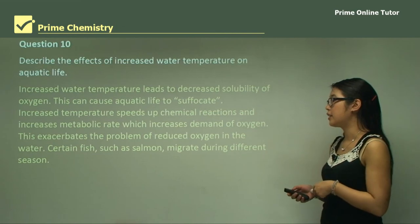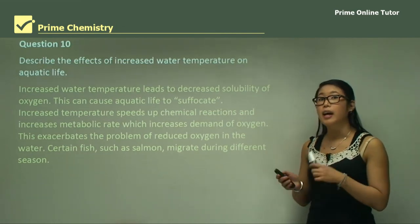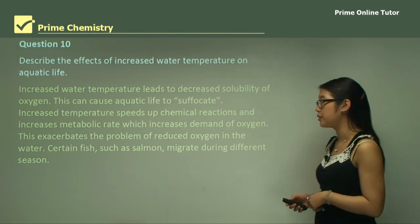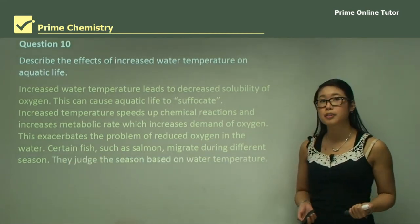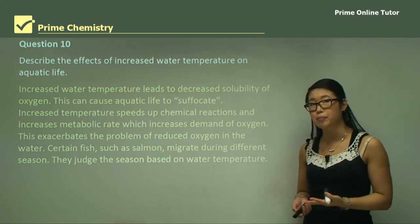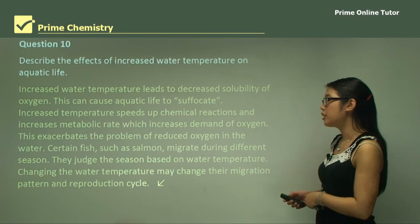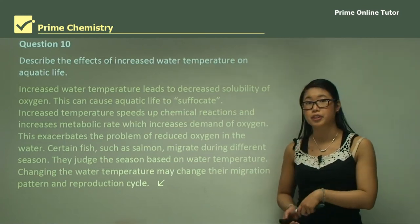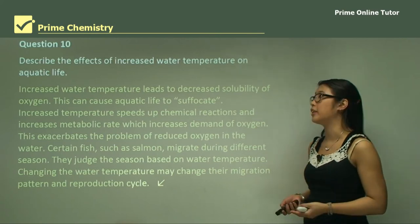Certain fish such as salmon migrate during different seasons, and the seasons are judged by how hot or cold the water is. They base when to migrate on water temperature, so if we heat the water up it may seem like summer has come too early. Changing the water temperature can therefore alter their migration patterns and reproduction cycle.